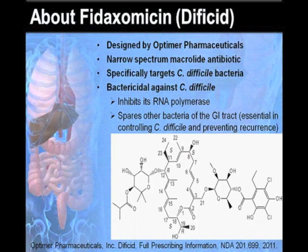Fidaxomicin, or Dificid, is a narrow-spectrum macrolide antibiotic designed by Optimer Pharmaceuticals to target Clostridium difficile bacteria. The drug is bactericidal against Clostridium difficile as it inhibits its RNA polymerase. Being narrow-spectrum, it spares the other bacteria of the gastrointestinal tract, which is an essential element in controlling Clostridium difficile and in prevention of its recurrence.